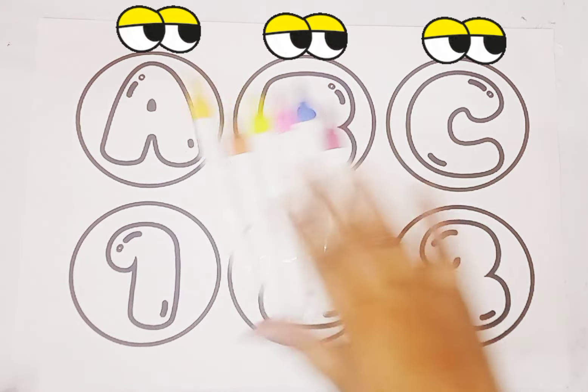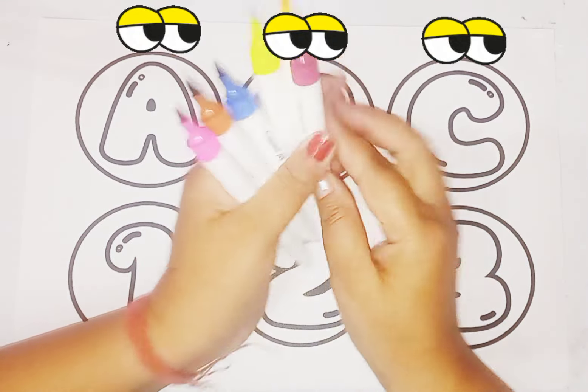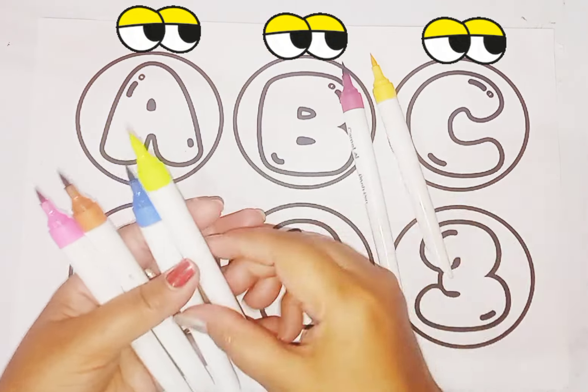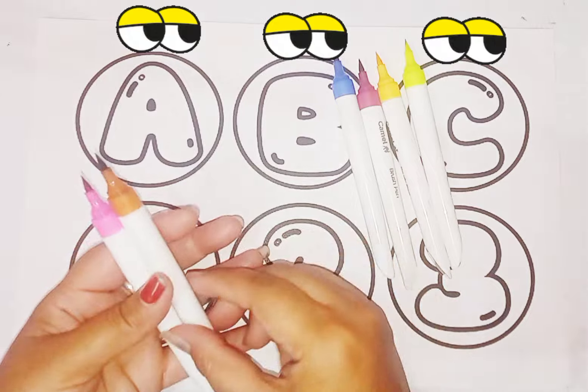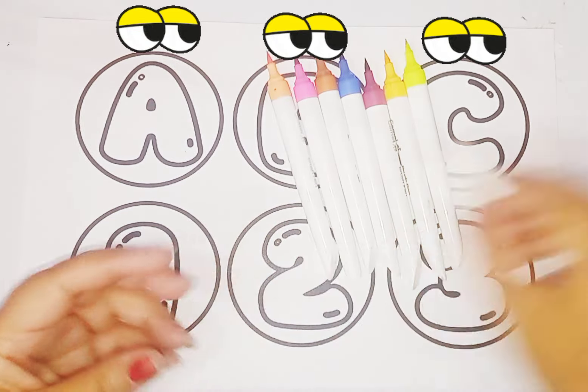These are colors. Cute, cute colors. Let's learn some colors name. Pine color, yellow color, violet yellow color, blue color, brown color, pink color, and this one is peach color.